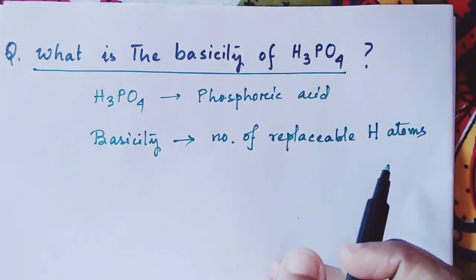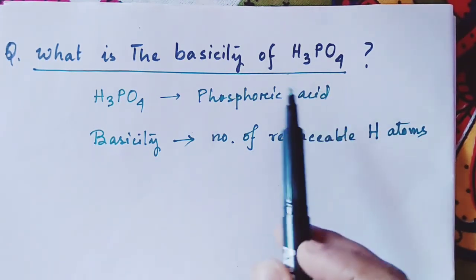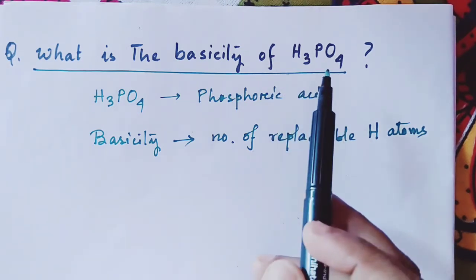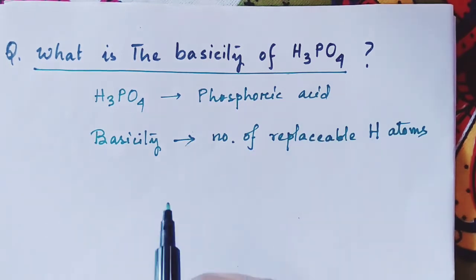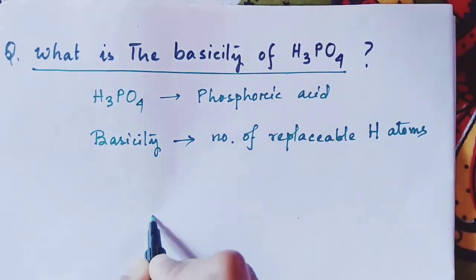Number of replaceable hydrogen atoms is equal to the basicity of that molecule. Now here it is given H3PO4, so we have to find out how many hydrogen atoms are replaceable. First, draw the structure of H3PO4.